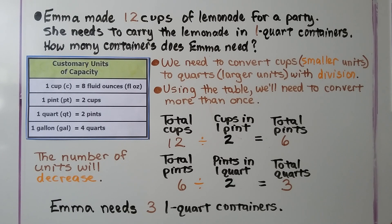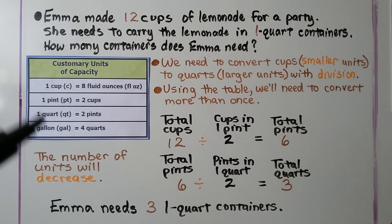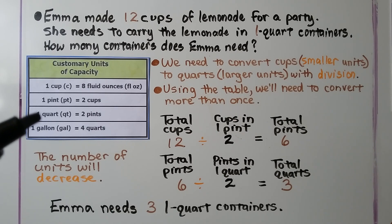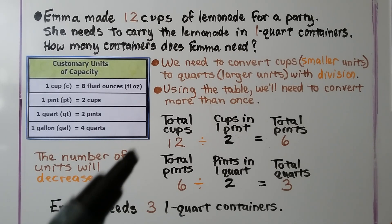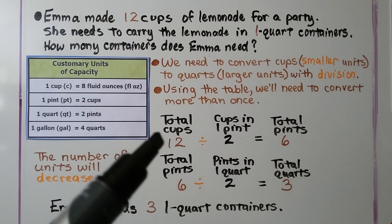Emma made 12 cups of lemonade for a party. She needs to carry the lemonade in one-quart containers. How many containers does Emma need? We need to convert cups, the smaller unit, to quarts, the larger unit, using division. We'll need to convert more than once — going from cups to pints, and then pints to quarts.